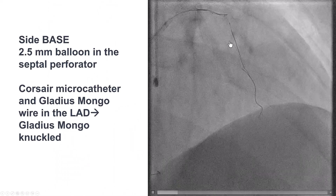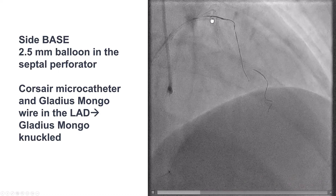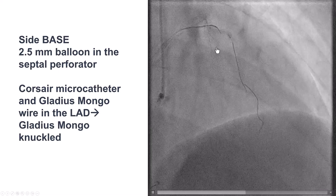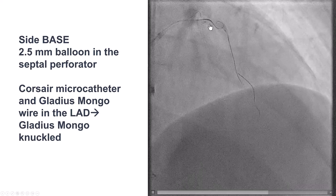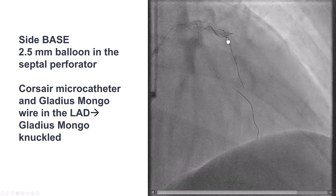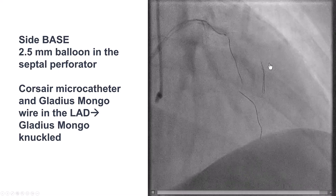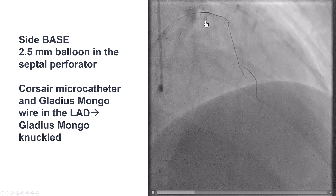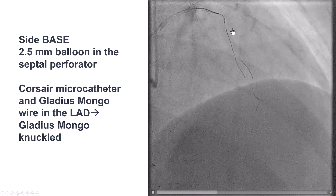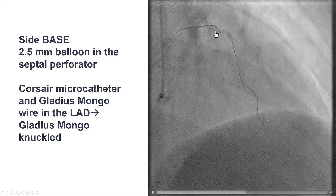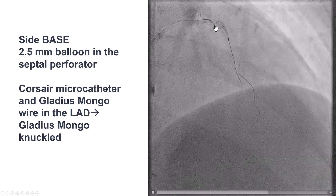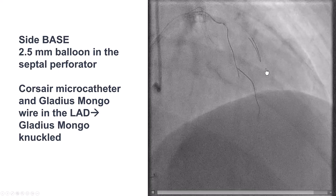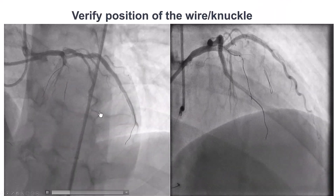We used a 2.5 mm balloon into the second septal branch and a Corsair microcatheter advanced next to this balloon. The balloon was inflated, and then we used a Gladius Mongo guide wire, knuckling it and advancing it further down. The wire eventually took a knuckle and advanced along the course of the vessel — a nice example of the side-base technique. The balloon anchors the Corsair microcatheter, providing extra support so the Gladius Mongo loop finds the extraplaque space and advances down the course of the LAD.